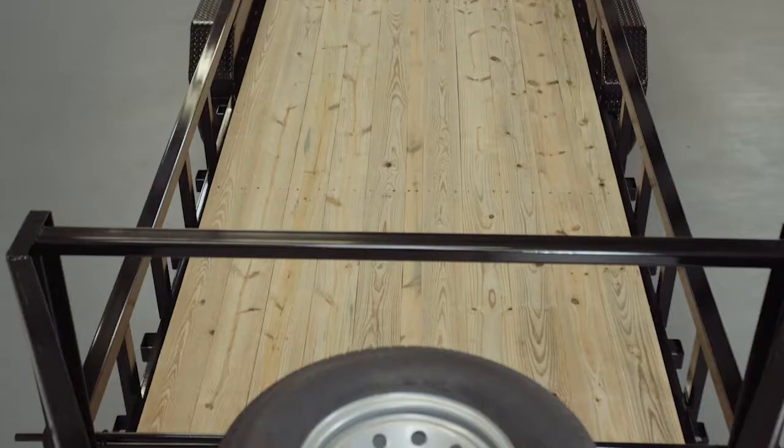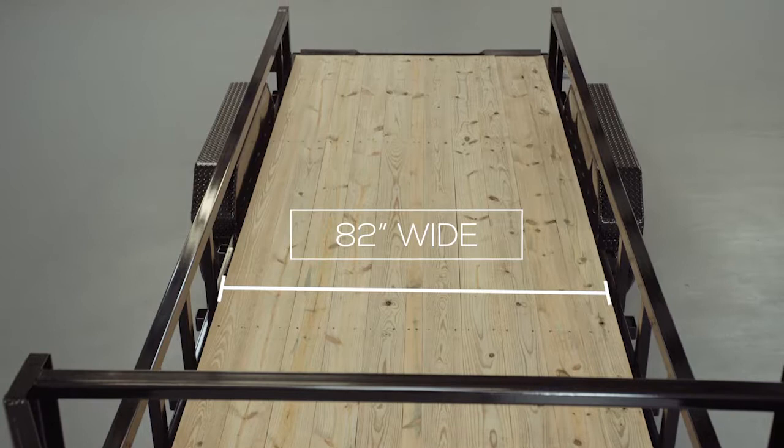The inside measurements of the deck in between fenders are going to be about 82 inches wide. And the overall width of the trailer from outside to outside will be 102 inches wide.